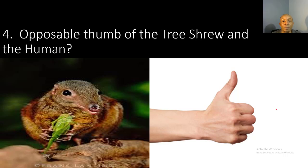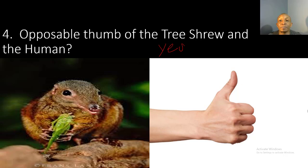Number four: the opposable thumb of the tree shrew and the human — yes, these are homologous structures. Both use their hands to grasp objects. The shrew is grasping a katydid or grasshopper, and the human can use this to grasp a soda or a number of other items.